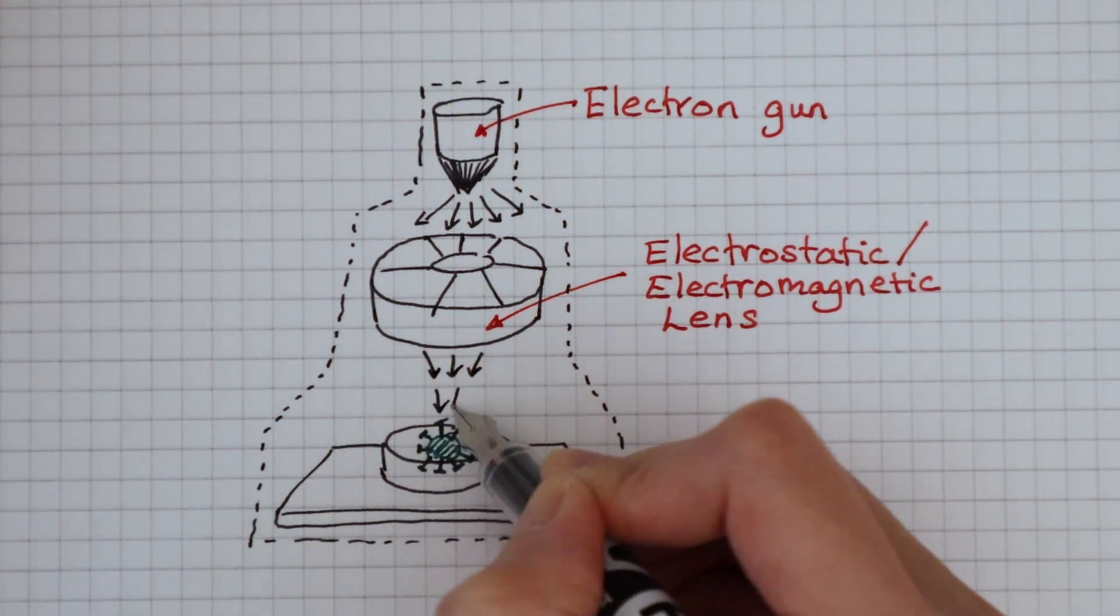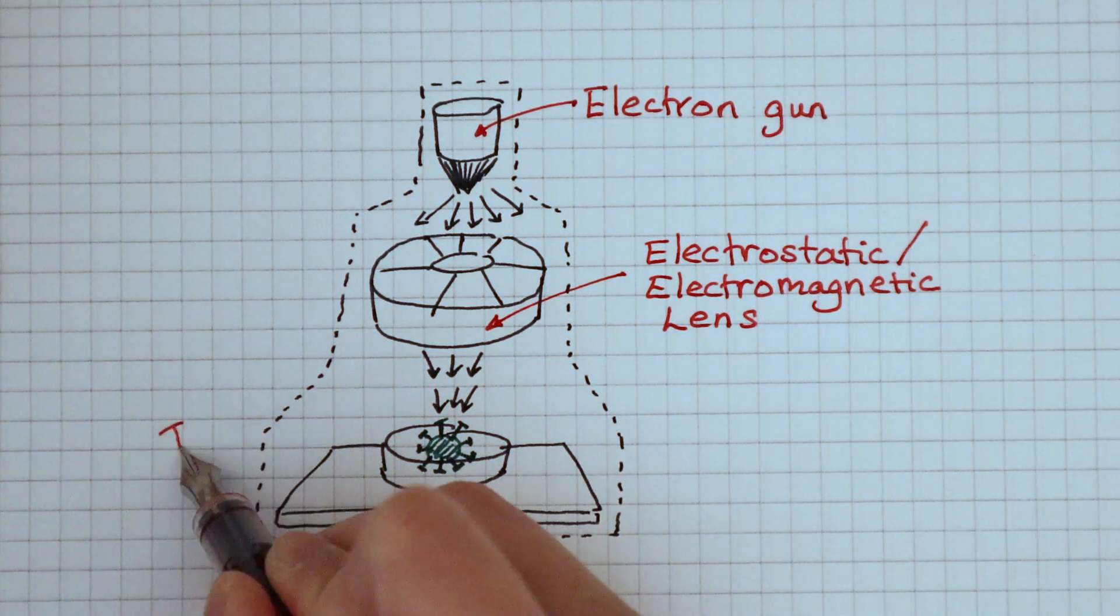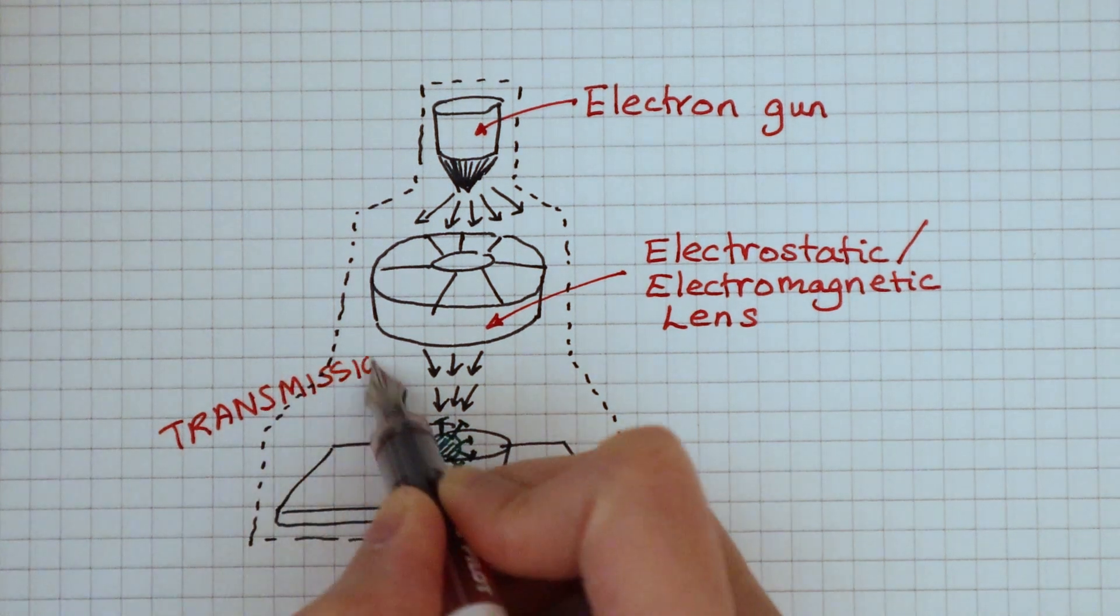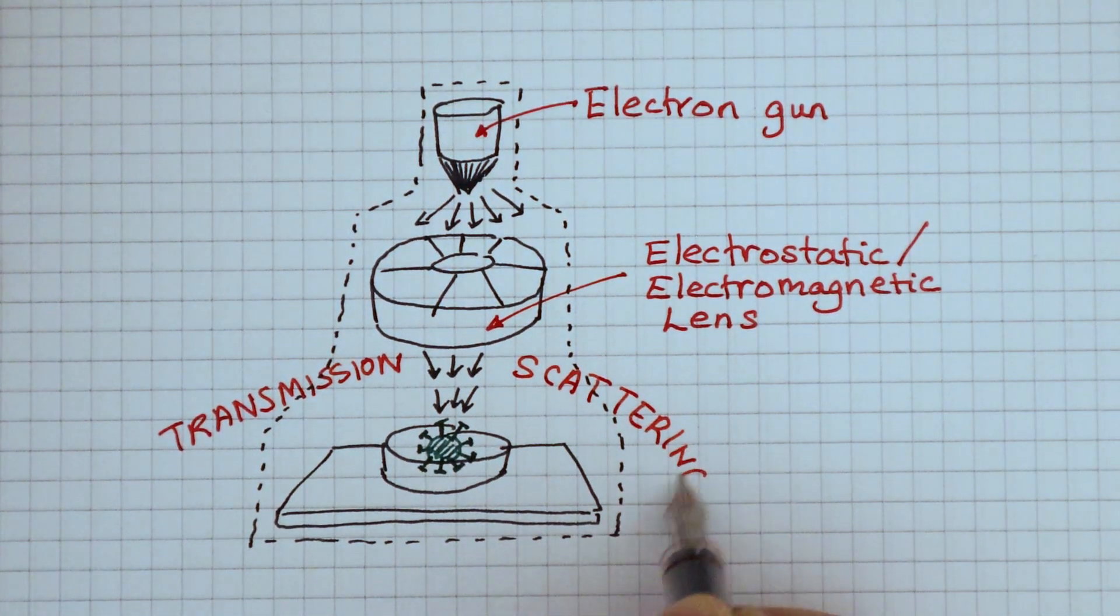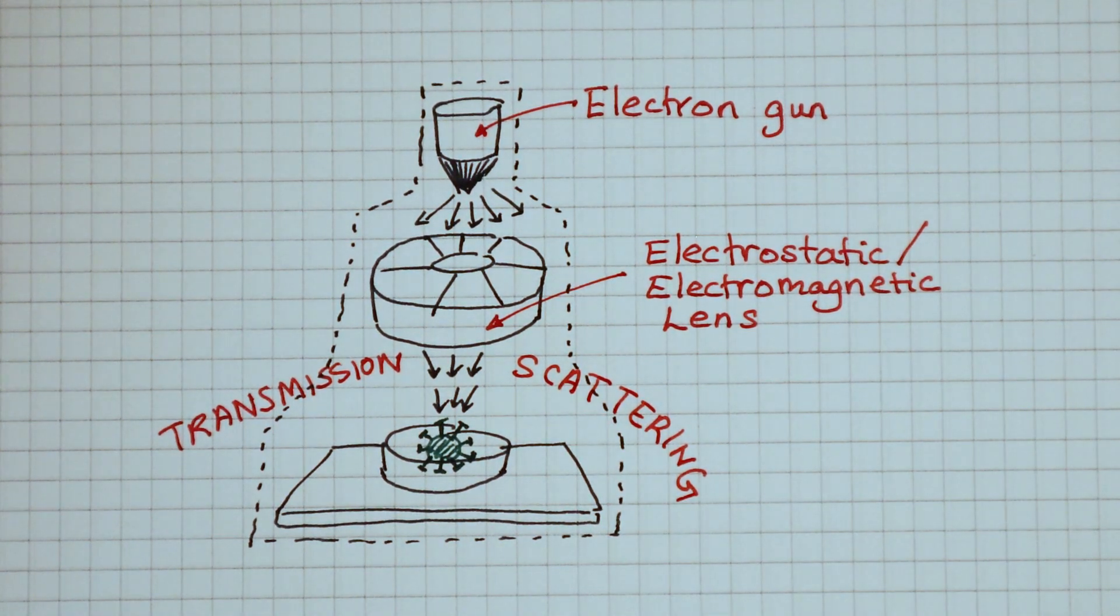Then the electrons either transmit through some parts of the virus, or they get scattered by other parts of the virus. By studying the transmission and scattering of electrons, we then begin to build up the virus's structure.